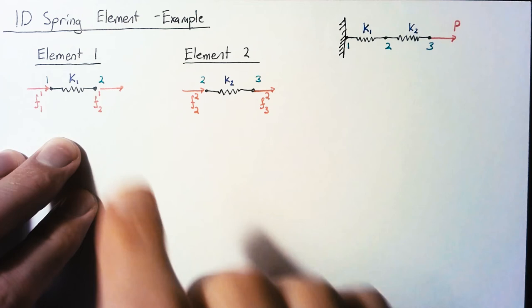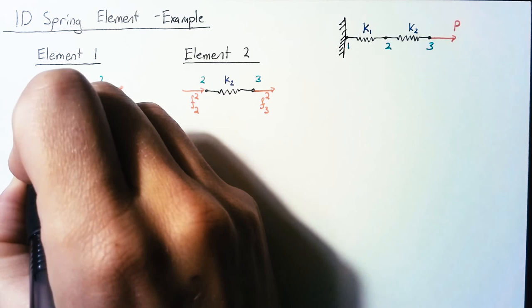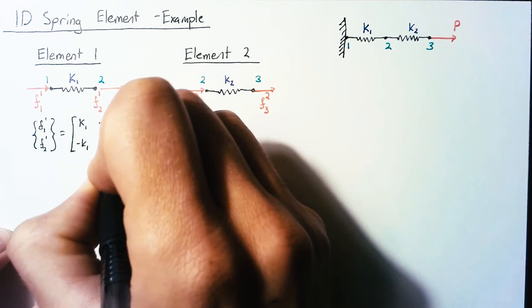So for each element, we're going to have a force vector, a stiffness matrix, and a displacement vector. And the only thing that really changes here are the numbers that we're putting in.